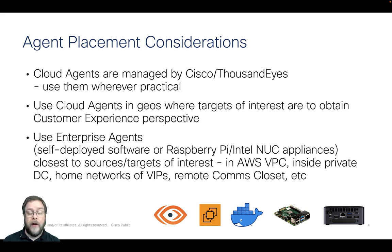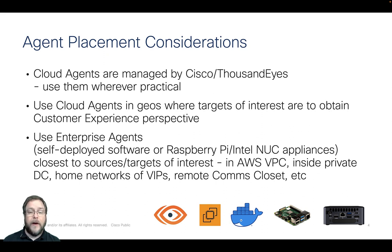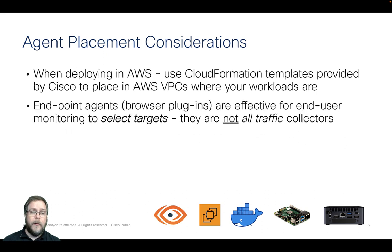When you want something very specific down to a building or even a home user environment, you would use enterprise agents. Those are the ones you can self-deploy, whether using AWS CloudFormation like we did in part one, or by deploying Raspberry Pi, Intel NUCs, Docker containers, or Linux packages — whatever suits your deployment.